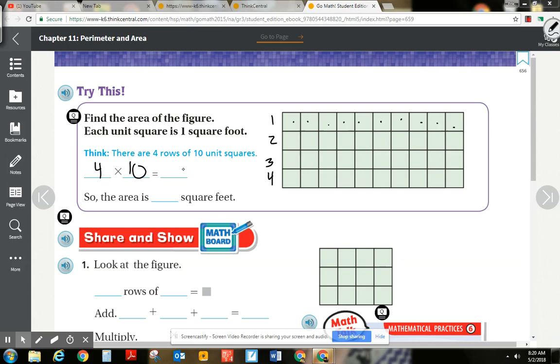And four times ten, four times ten, twenty, thirty, forty. So that's four times. So the area is 40 square feet. I hope that you got this problem correct.